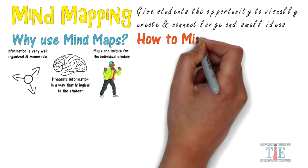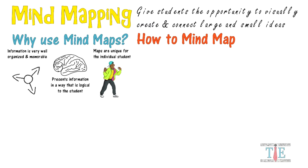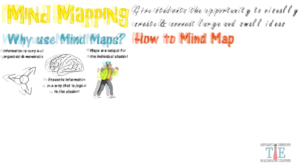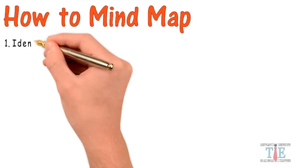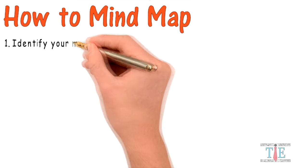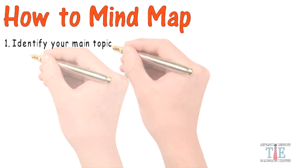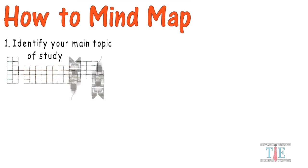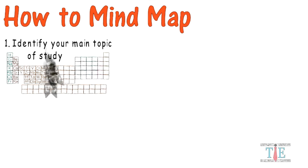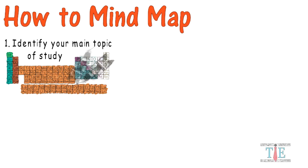Let's discuss how teachers and students can mind map. The first thing you should do is identify the main topic of study. Maybe the student is in a chemistry classroom, but the main topic of study for the day is the periodic table.